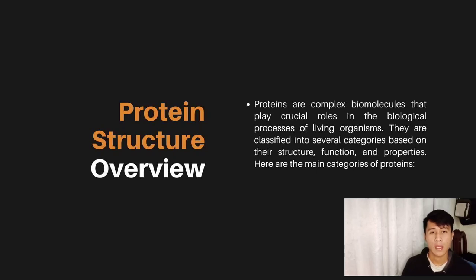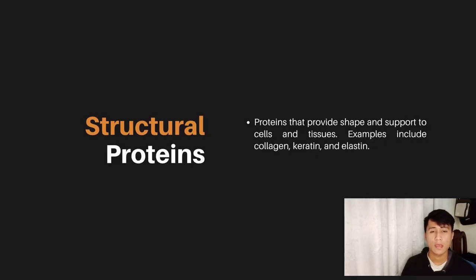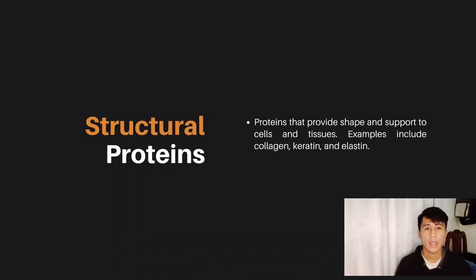Here are the main categories of proteins. First is structural proteins — proteins that provide shape and support to cells and tissues. Examples include collagen, keratin, and elastin.